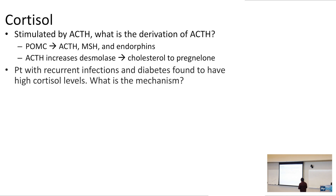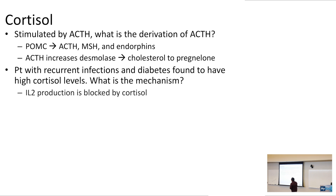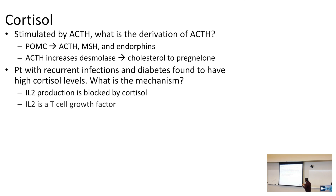A patient with recurrent infections and diabetes is found to have high cortisol levels. How does cortisol cause hyperglycemia and immunosuppression? IL-2 production, which is the T cell proliferator, is going to be blocked by cortisol. Cortisol is also going to stimulate gluconeogenesis.